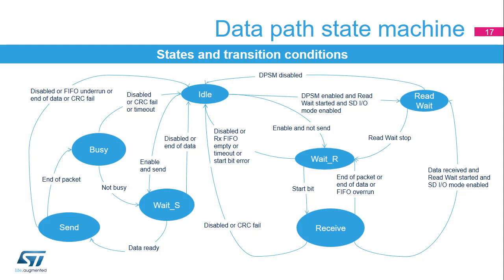At the end of each data packet, the DPSM sends an internally generated CRC code and end bit and moves to the busy state. In busy state, the DPSM waits for a CRC status flag. If it receives a positive CRC status, it moves to wait S state when the card is not busy. From wait S state, a new packet transmission can start or the DPSM can return to idle state when all the data is transmitted or the transfer is disabled. A negative CRC status from the card or a FIFO underrun error can force the DPSM to return to idle state when the card is not busy.